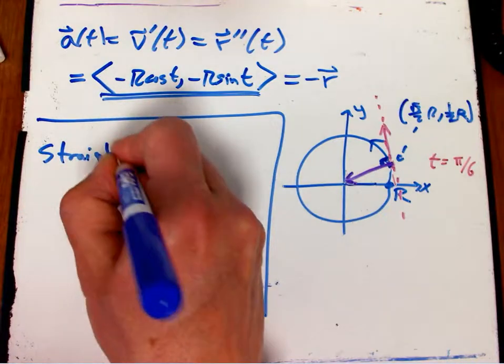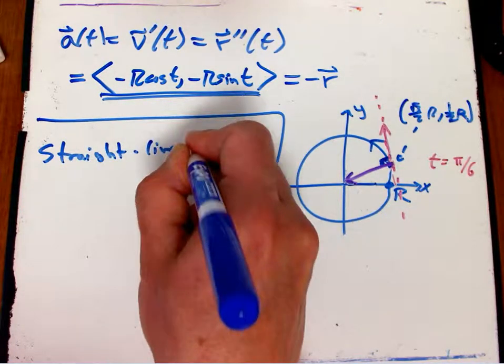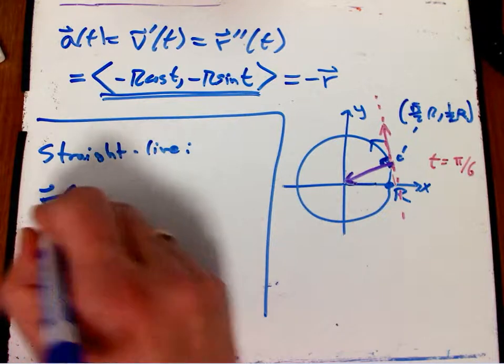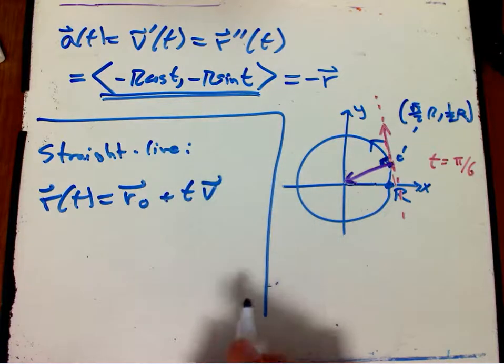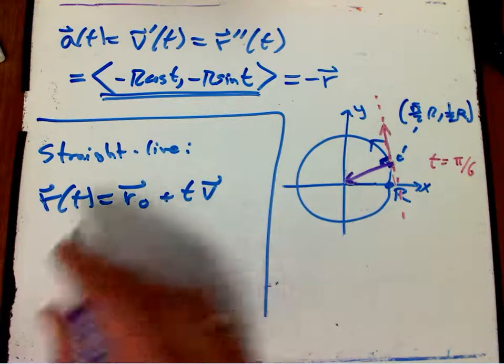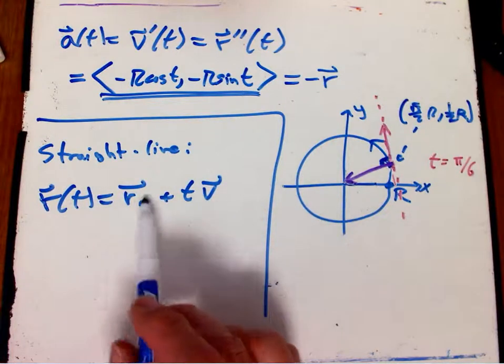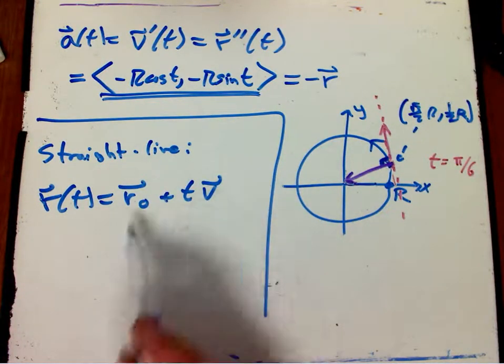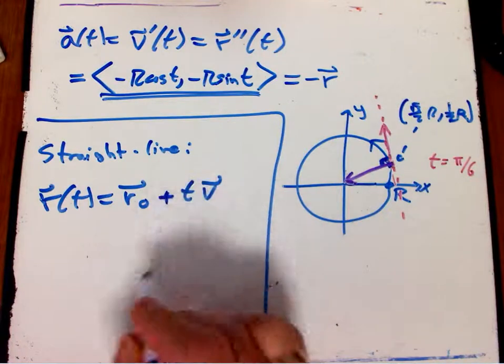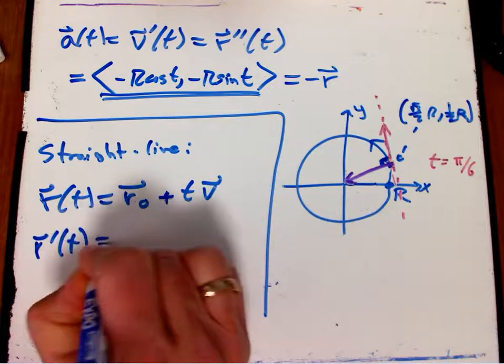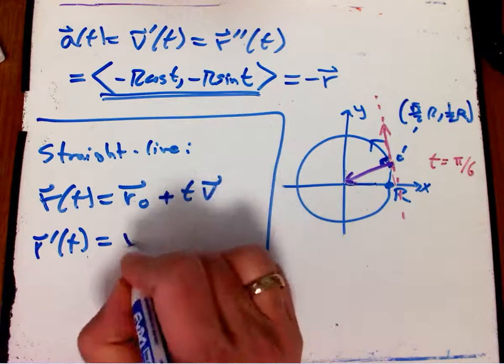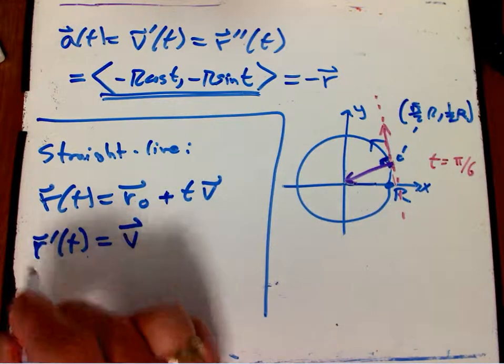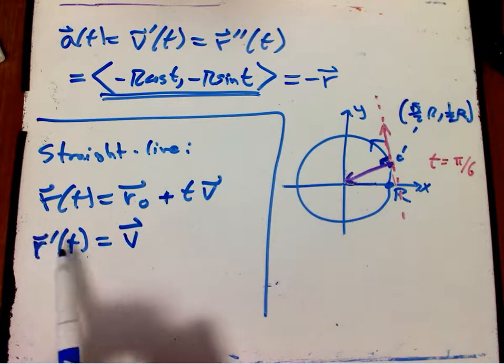So the straight line case, remember r of t, was a constant vector plus t times another constant vector. Great thing about differentiating vector functions is you can work with vectors, constant vectors, as if they're just constant numbers. You have analogs for all of the rules of differentiation. r prime of t, the derivative of a constant is just zero. And the derivative of a constant times t is just that constant.